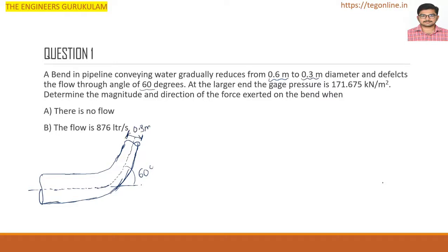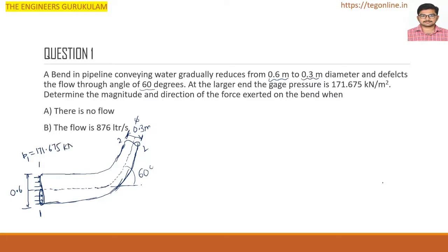Section 1 has diameter 0.6 meters (call it D1) and Section 2 has diameter 0.3 meters (D2). Area A1 = π/4 × D1² and Area A2 = π/4 × D2². At the larger end (inlet), the gauge pressure is 171.675 kilonewtons per meter square.